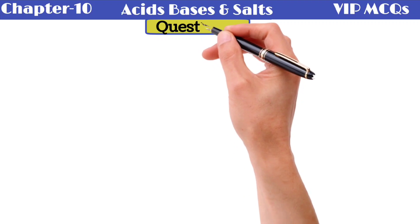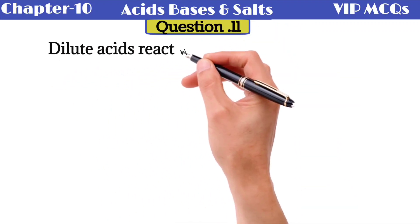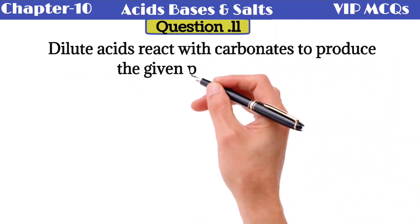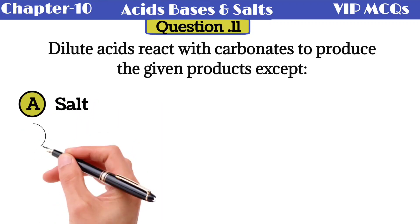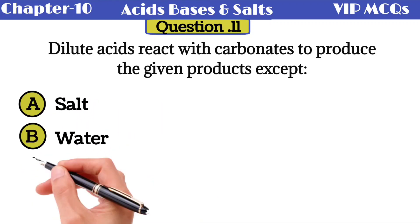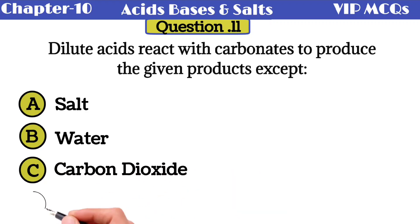Question number 11: dilute acids react with carbonates to produce the given products except - option A salt, option B water, option C carbon dioxide, option D hydrogen. The correct option is hydrogen.